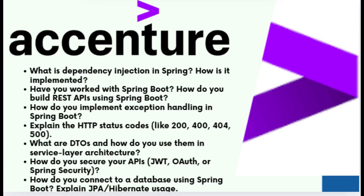The next question was: how do you connect a database in Spring Boot? Every Java full stack developer should know this — it is a very common question. The steps are: configure the DB URL, username, and password in application.properties; use the @Entity annotation to define the model; and create a JPA repository interface. Spring Boot will automatically create SQL tables and provide methods like save, findAll, etc.